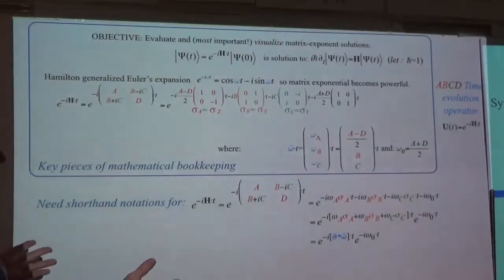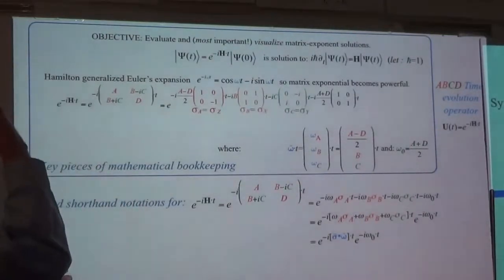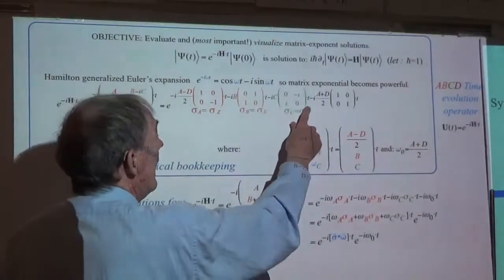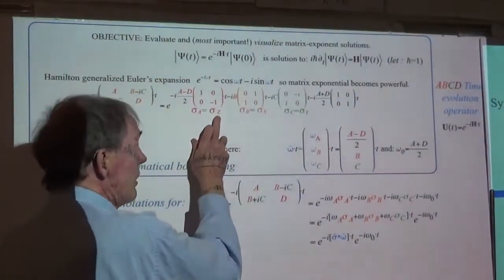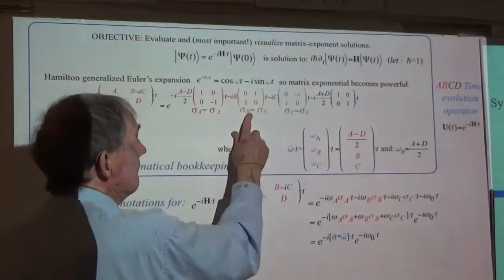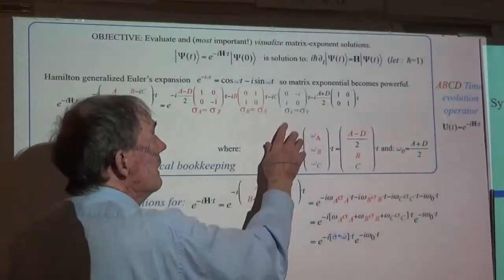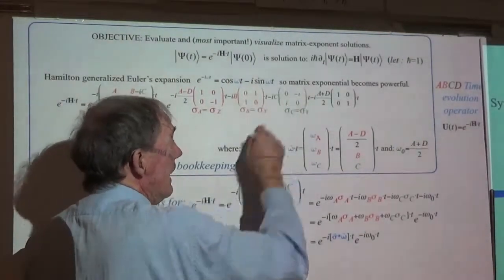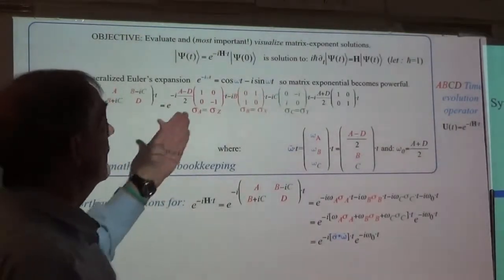We're not going to resort to projection solutions; we're going to try to get this the old-fashioned way. The exponent has the A type — commonly called Z — the B type, commonly called X, that's the X spinner — and the C type, which is the Y, the weird one. It's got an i and a minus-i off diagonal. Those are the three things that are really here.